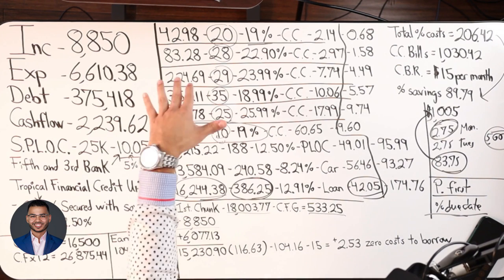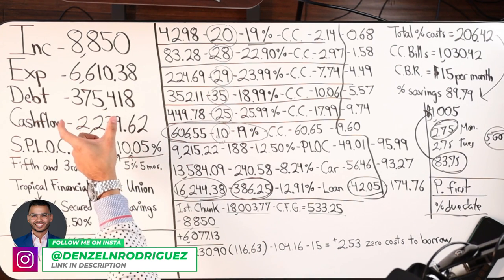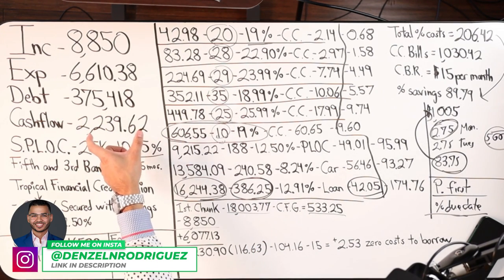They owe more like $500,000 or more in interest, right? Total. They actually owe $500,000 plus, but they're only putting $375,000 because that's principal what you owe, right?